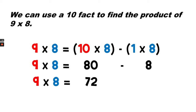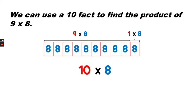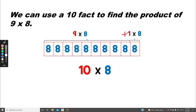So 9 times 8 equals 10 times 8 take away 1 times 8. Therefore 9 times 8 equals 80 minus 8, which equals 72. We can also say that 10 times 8 minus 1 times 8 equals 9 times 8.